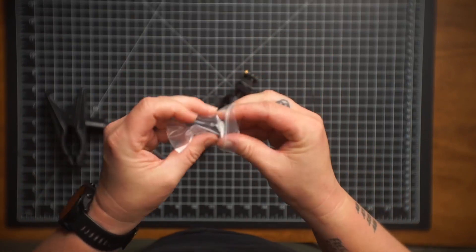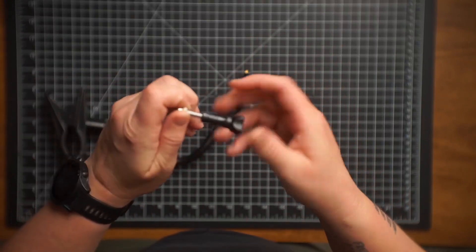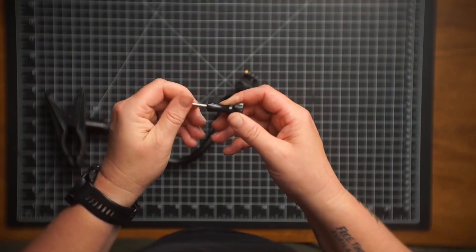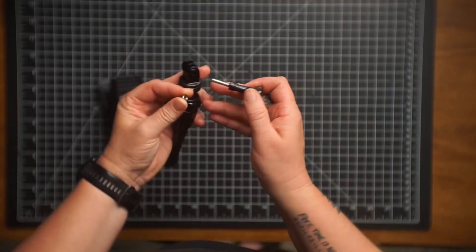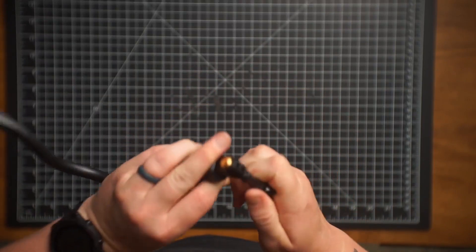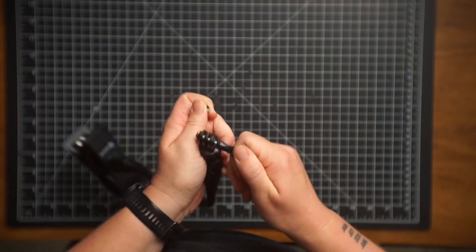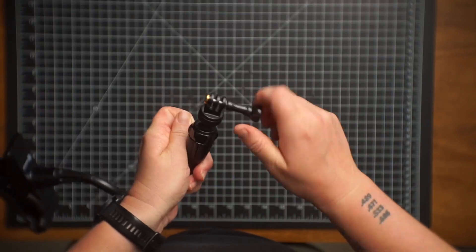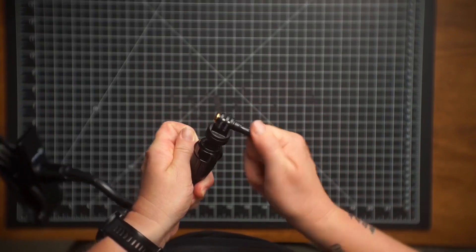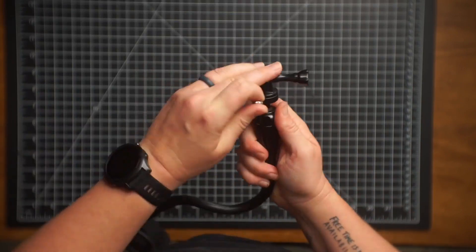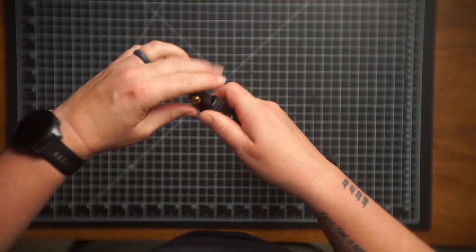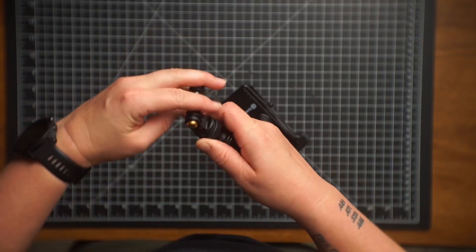And then here you have the mounting point, basically. So you unscrew that. And that goes... should just go in like this. So that means that you need to attach like a GoPro here. Let me see. I actually think, yep, this comes off.